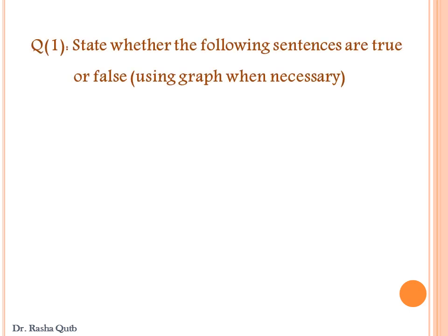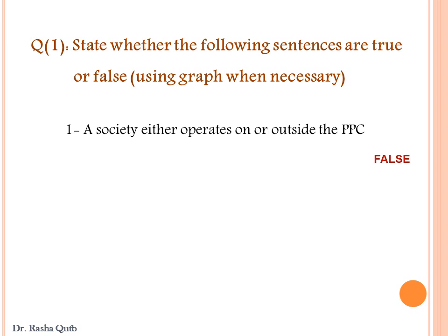Let's now turn to solve some problems relating to the economic problem. The first question asks us to state whether the following sentences are true or false. First: a society either operates on or outside the production possibility curve. This sentence is false. Because a society can only operate on or inside the production possibility curve.